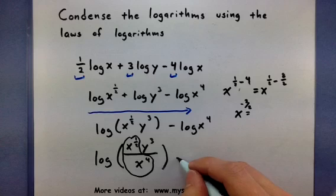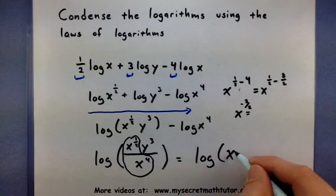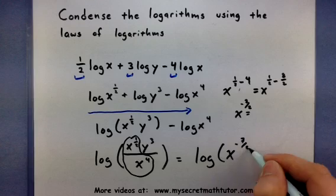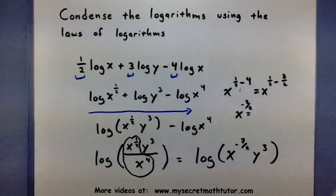This means I will write the log as x to the negative 7 halves times y to the 3rd. So not only do we have it down into a single logarithm, I've made sure that I've combined all my variables as far as I could.